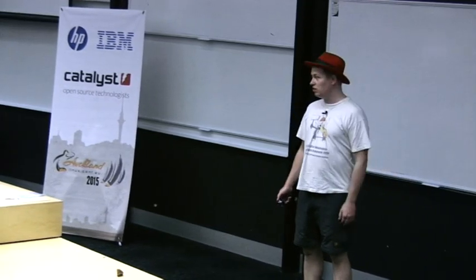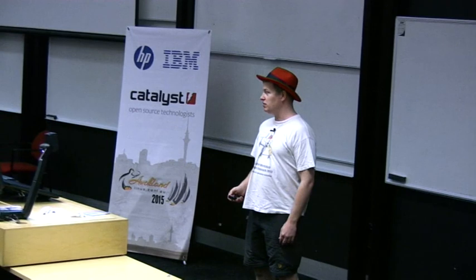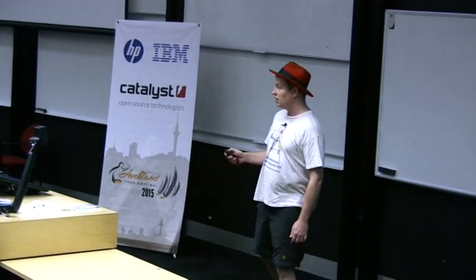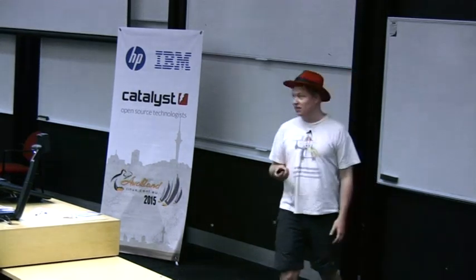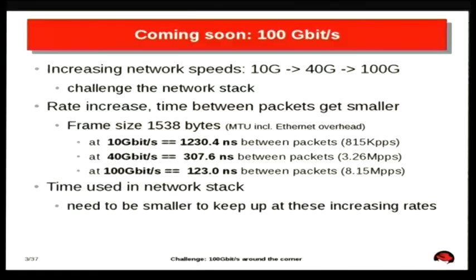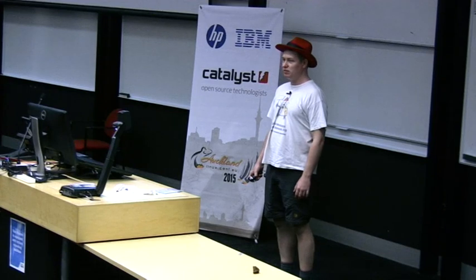I implemented what I call a QMEM pool which is a lock-free, bulk, alloc/free scheme, just to show that we can do something faster than the slab allocator. So 100 gigabit NICs are actually starting to come, so it's challenging the network stack quite a lot. When we increase the rate, the time between packets gets smaller and we have to use less time in the network stack to process packets.